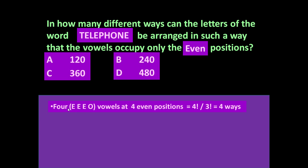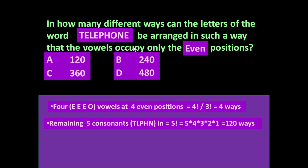These four vowels at four even positions can be arranged in factorial four ways, but E is repeated three times, so we divide by factorial three. Factorial four divided by factorial three equals four ways. So these four vowels can occupy the four even positions in four different ways.